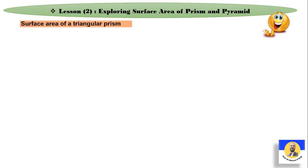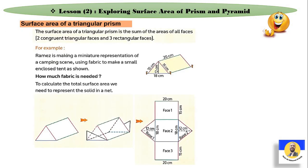بعد ما تعرفنا في اللي فات على Surface Area, how can we find it? في مثلاً الكيوب. نفس الفكرة اللي احنا خدناها المرة اللي فاتت، بس بدلاً من الـ rules كنا بنجيب الـ area for each face. وفي الأخر بنعمل sum of all faces. نفس الفكرة دي هنعملها النهارده مع two shapes التانيين اللي هو triangular prism والـ pyramid.